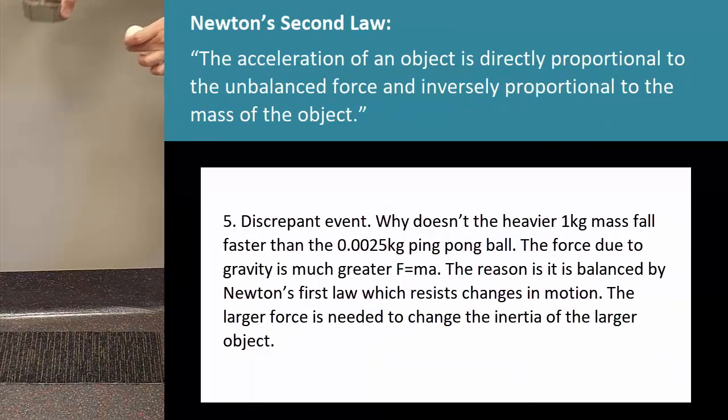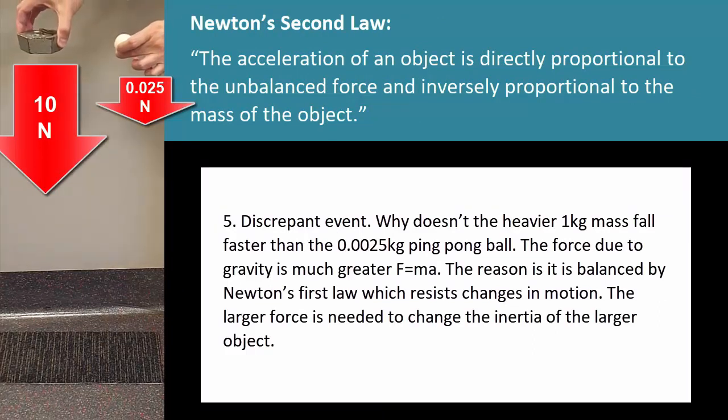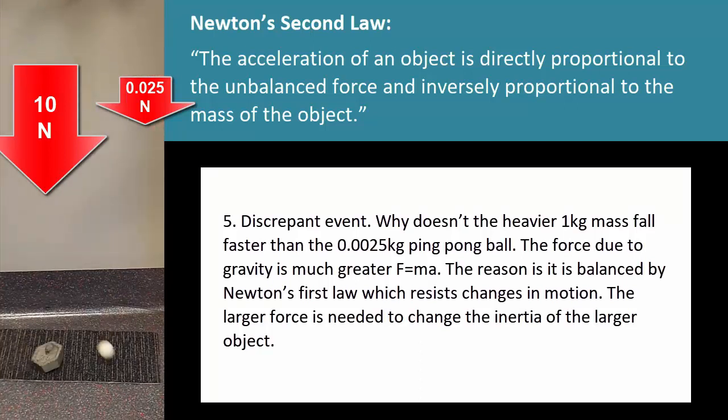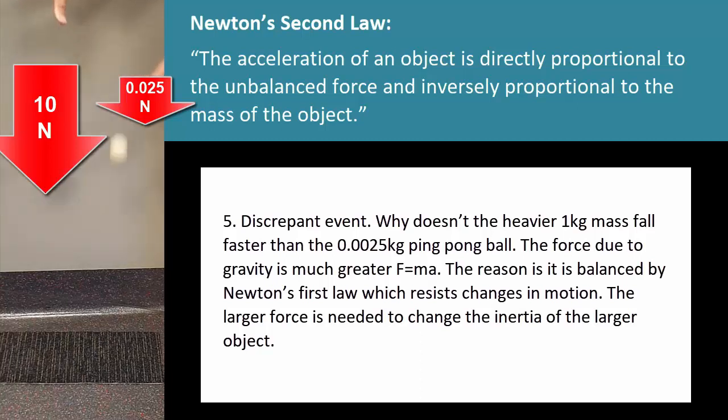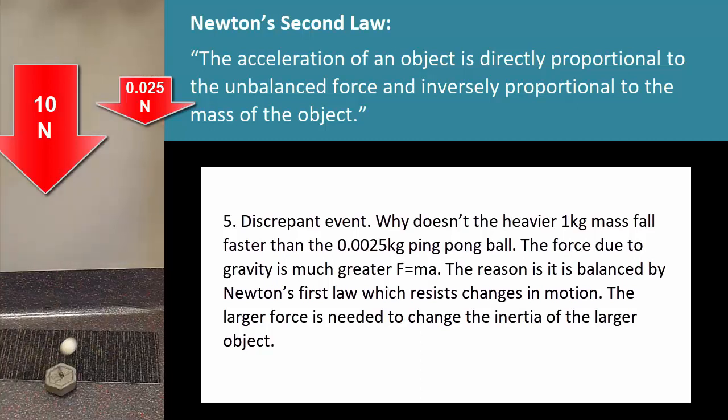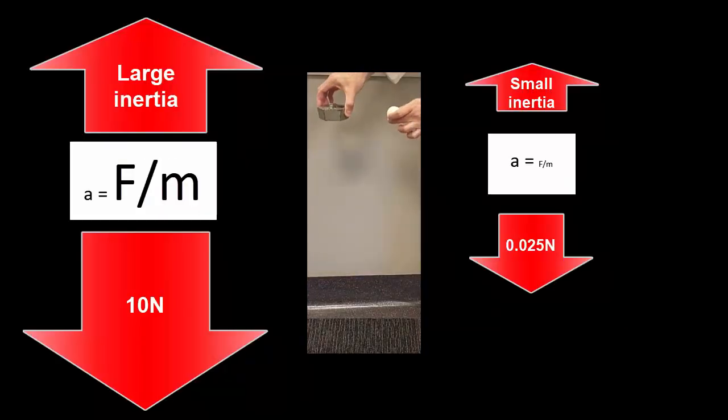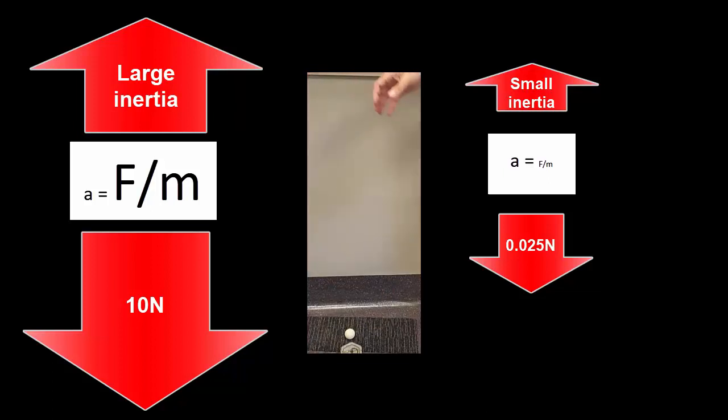This is called a discrepant event. The air resistance is negligible, but it's a one kilogram mass, so you've got 10 newtons versus 0.025 newtons. Why doesn't the heavy object fall faster? It's a classic question. You can look at it several ways. You can simply say inertia - a heavier object takes more effort to move than a smaller object, so they balance each other out. The force due to gravity is larger but so is the inertia. For the ping pong ball, the force due to gravity is smaller but so is the inertia.